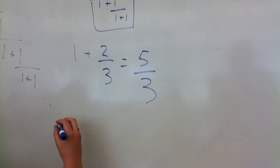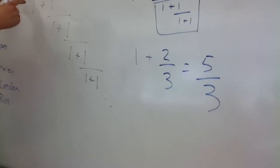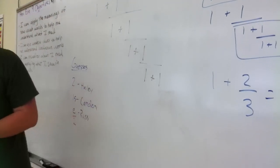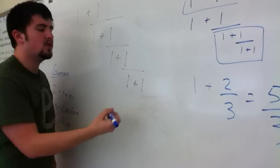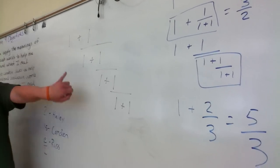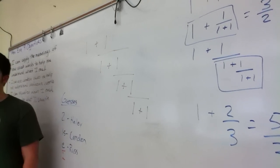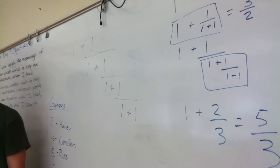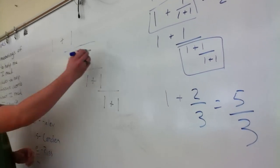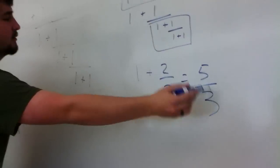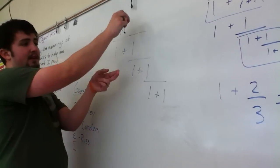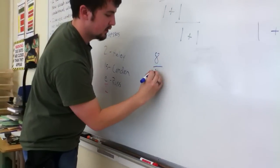This is going to be the last iteration I do. What's this one? Think of what we just did to help you do this. 7 fourths? So now it's going to be 8 fifths, right? 8 fifths — yeah, 1 plus 3 over 5. Because this is 5 thirds, and then you reciprocate it because it's 1 over that, and then you add 1 to it. So this becomes 3 fifths plus 5 fifths equals 8 fifths.